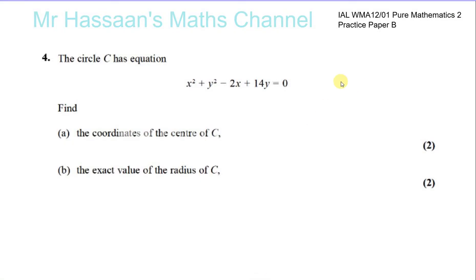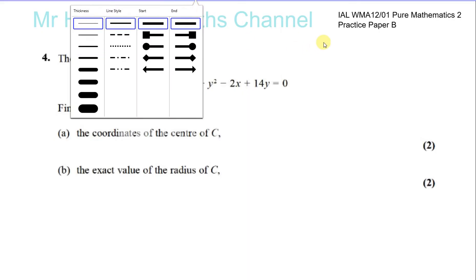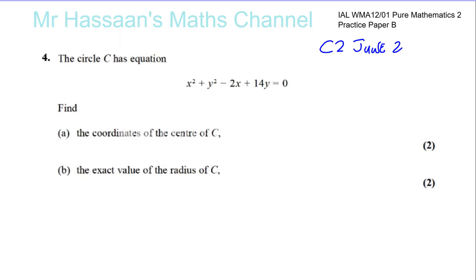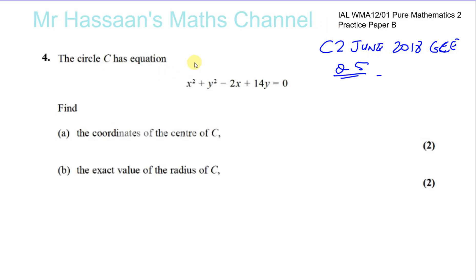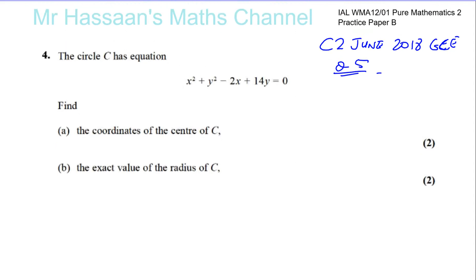Question number four, practice paper B, pure mathematics 2 — this is the IAL paper I've compiled. This question is taken from C2, June 2018, the GCE paper, and I think it's question number five from that paper. This whole paper is compiled from either C2 June 2018 or C1 June 2018, so I compiled the questions so that they are related to the new P2 syllabus. I've modified one or two questions to make them more relevant to our syllabus.